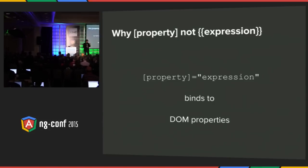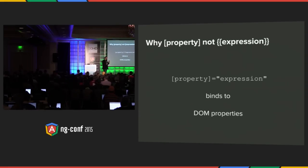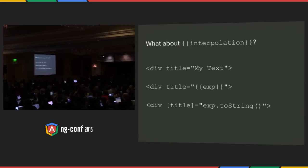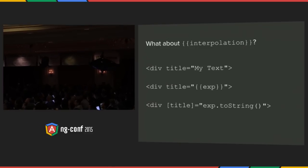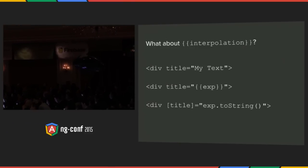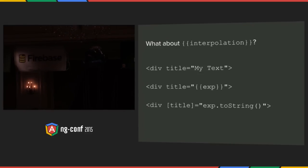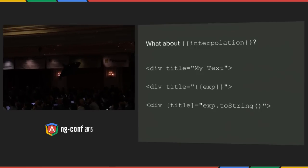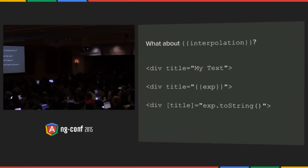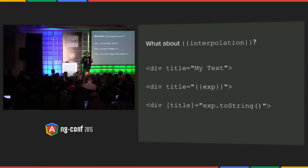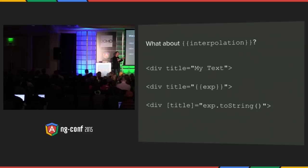Properties solve two interesting things. First, when you have properties you get to pass models — attributes only understand strings, but with properties you can pass complicated models. And it solves the problem of Boolean attributes. So the big takeaway is we're changing two things: first, we're escaping the left-hand side of the expression; and second, we are binding to properties, not to attributes of the element. Now you're wondering about the double curly interpolation — yes, you can have it. But think of it as just a shorthand. When you say title equals double curly expression, that's just shorthand for binding the title property to the expression.